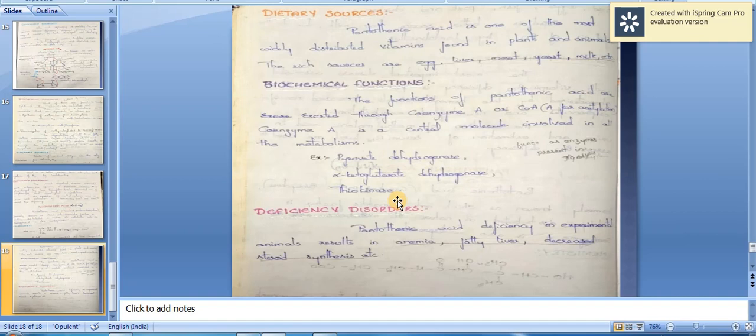Deficiency disorders of pantothenic acid: it is surprising to biochemists that despite the involvement of pantothenic acid as coenzyme A in a great number of metabolic reactions, its deficiency manifestations have not been reported in humans. This may be due to the widespread distribution of this vitamin, or the symptoms of pantothenic acid deficiency may be similar to other vitamin deficiencies.